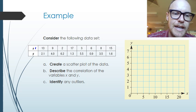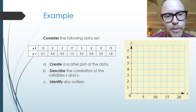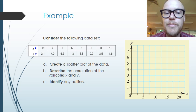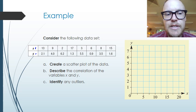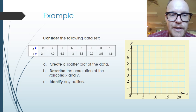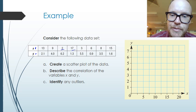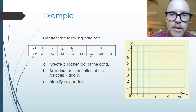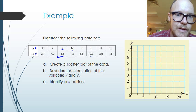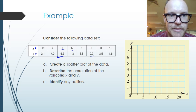Let's look at an example. We have a bivariate data set with two variables, x and y. We're asked to create a scatter plot, describe the correlation, and identify any outliers. When drawing our axes, it's important to check the smallest and largest values — the smallest x value is 2 and the largest is 17, and on the y-axis the smallest value is 0.9 and the largest is 6.2.